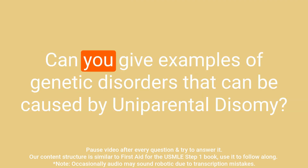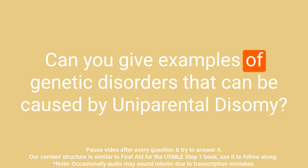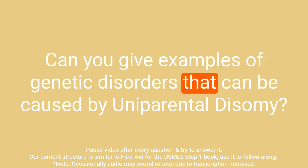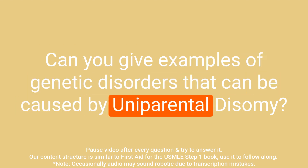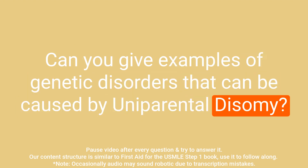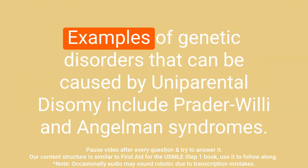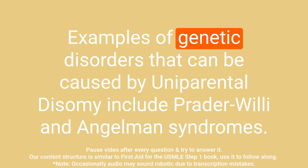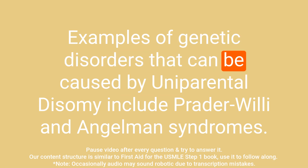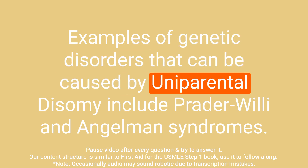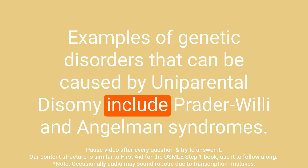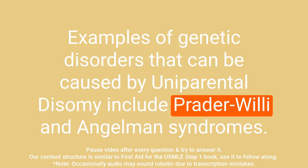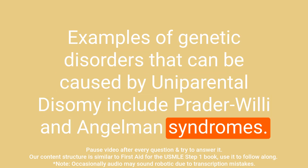Question: Can you give examples of genetic disorders that can be caused by uniparental disomy? Answer: Examples of genetic disorders that can be caused by uniparental disomy include Prader-Willi and Angelman syndromes.